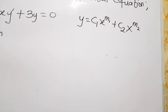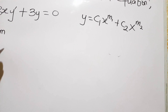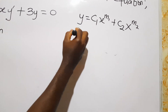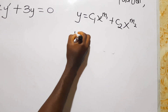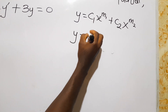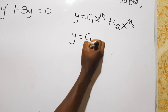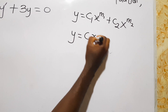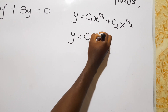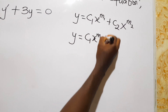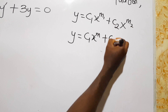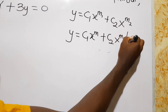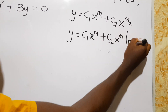If m gives repeated roots, then y equals c1·x^m plus c2·x^m·ln(x).